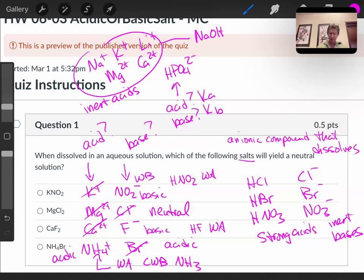We have two basic salts, one acidic salt, and we were asked about the neutral solution. That's magnesium chloride.